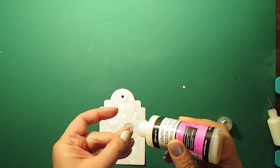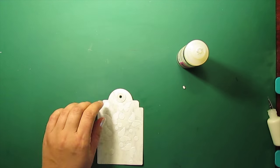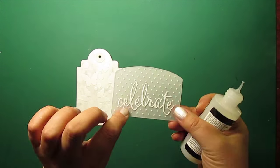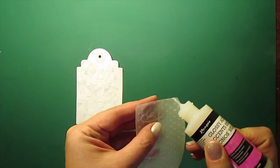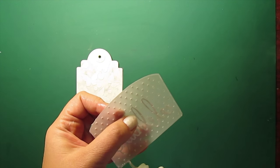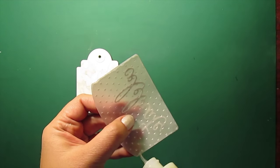To attach a pocket, I'm applying a tiny amount of glossy accent. The vellum I'm using is quite thick, so the glue will not really show through.